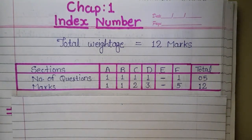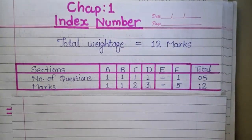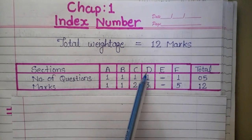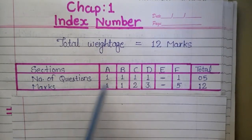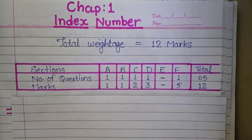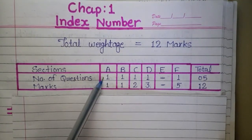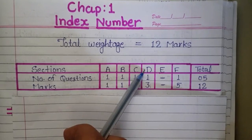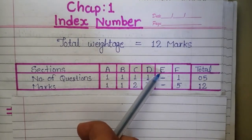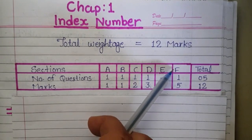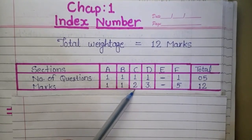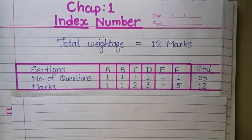Without wasting time, let's start. This is a very easy chapter and from the viewpoint of the board exam, its weightage is 12 marks, which is divided into sections A, B, C, D, and F. In section A, one question is asked for one mark; in section B, one question for one mark; in section C, one question for two marks; in section D, one question for three marks; no question in section E; and in section F, one question for five marks. So total weightage of this chapter is 12 marks.